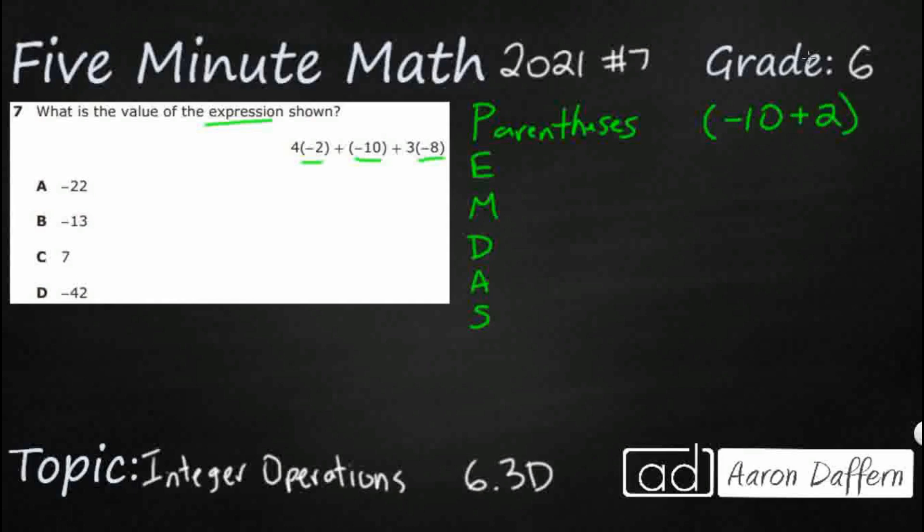You'd have to simplify this first, but we are actually just using parentheses here as kind of a separation and to show multiplication. So this four parentheses negative 2 shows four times negative 2. But if you were to write four times negative 2 without the parentheses, that looks kind of, it looks like four times minus 2. So that's why this four parentheses negative 2 is just a simpler way to do it.